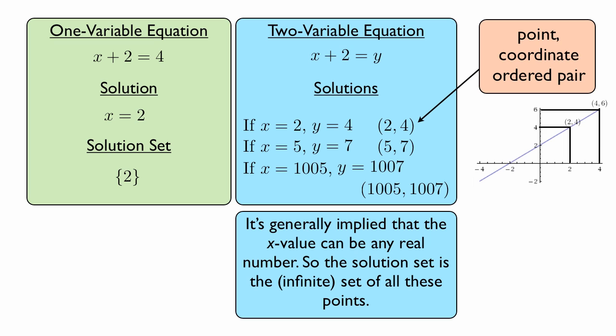And the line can be thought of as an infinite set of every single point that makes the equation true. That's what graphing a line means, or graphing an equation. It means you're graphing all the possible solutions. And because the line is continuous, it allows you to graph every single possible solution, not just a set of finite points.